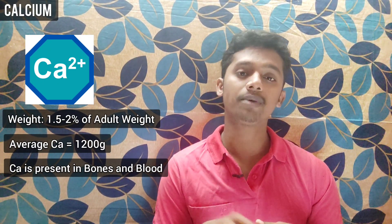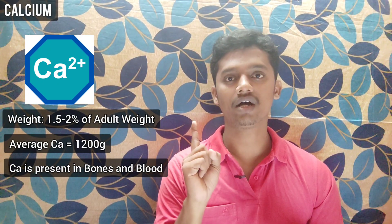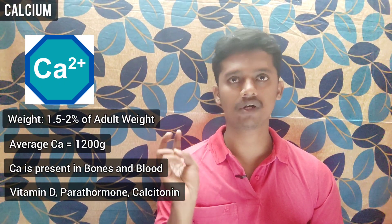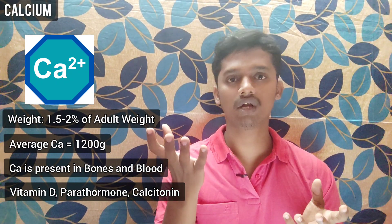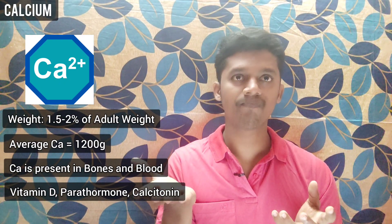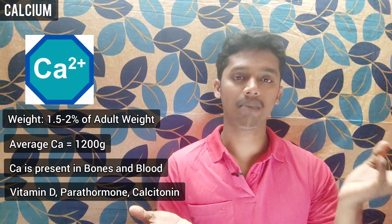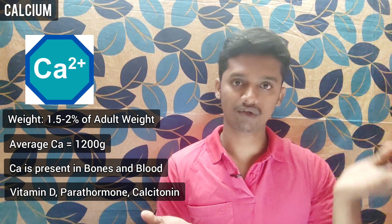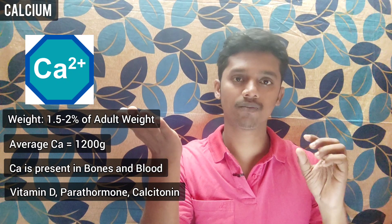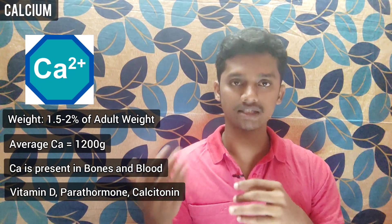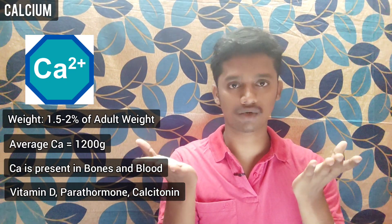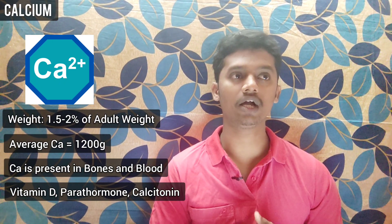Homeostasis is the most important process for calcium in our body. Three substances help maintain this balance: Vitamin D, Parathyroid Hormone, and Calcitonin. About 98% of calcium is stored in the bones, and when plasma calcium levels drop, these three substances are released to restore equilibrium. That is the homeostasis of calcium.